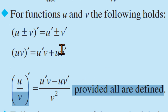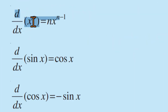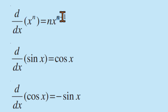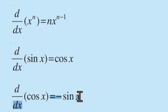Summary: derivative of u ± v is u′ ± v′; derivative of u·v (product rule) is u′v + u·v′; quotient rule for u/v. These are standard formulas. The derivative of xⁿ is n·xⁿ⁻¹. Derivative of sin x is cos x; derivative of cos x is minus sin x.